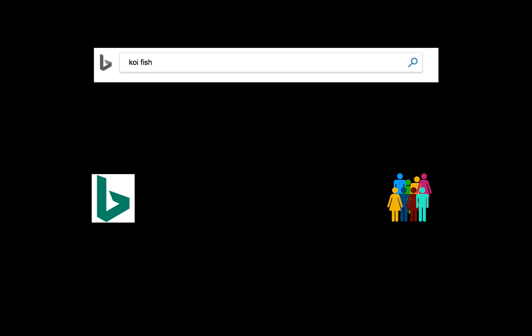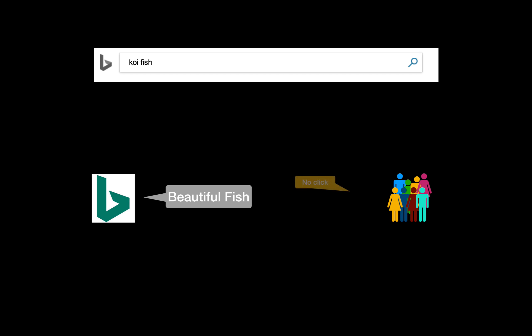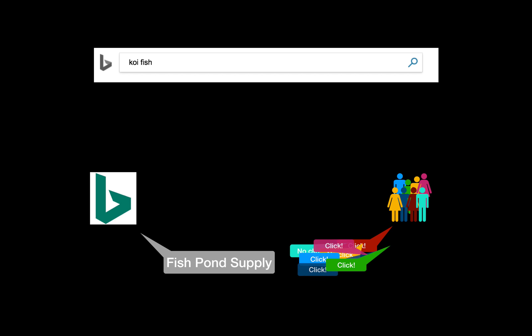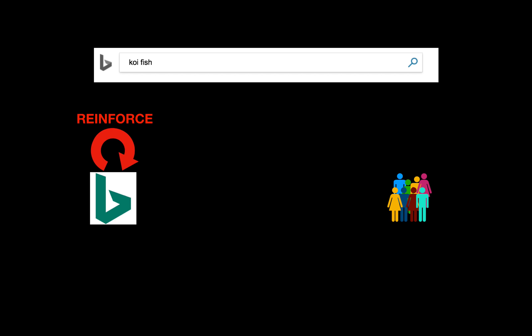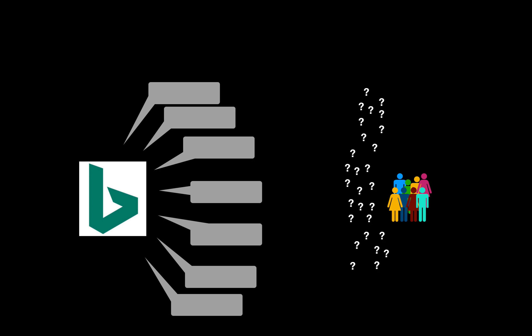Let's say we have several users searching for koi fish. We could run some experiments. First, we show 'iPhone 8' — the user isn't very satisfied, so we get a bad response. How about we show 'beautiful fish'? We get mixed responses, so 'beautiful fish' is a fine keyword. If we show 'fish pond supply,' there are several clicks and several non-clicks — and more clicks overall, so it gets further reinforced, and we tend to generate 'fish pond supply' for 'koi fish' more. The problem is that we have infinite queries, and sometimes we don't have enough user replies to cover all the cases we want.